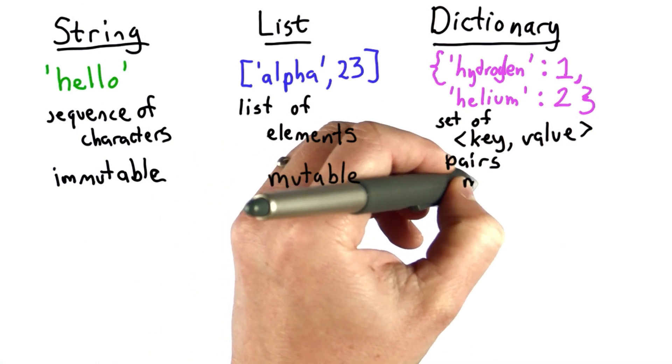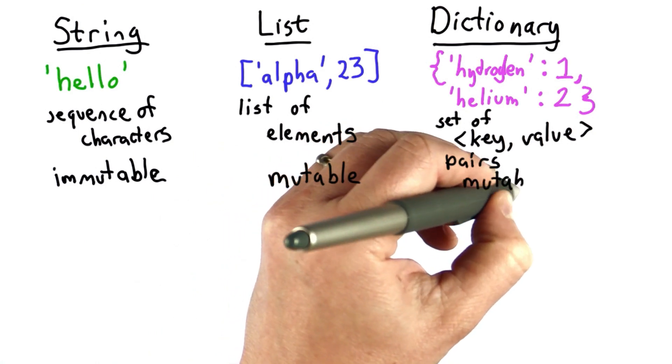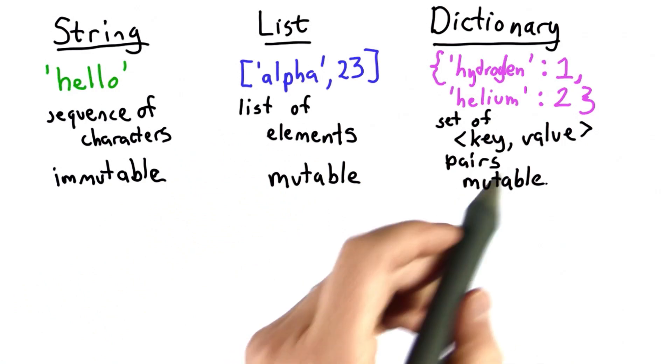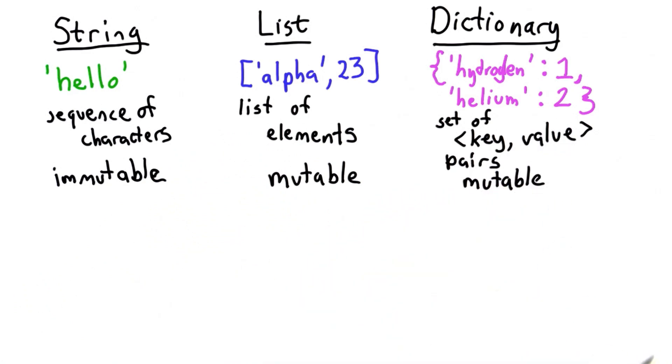A dictionary is also mutable. So after we create a dictionary, we could add new key value pairs to it. We could change the value of values associated with keys.